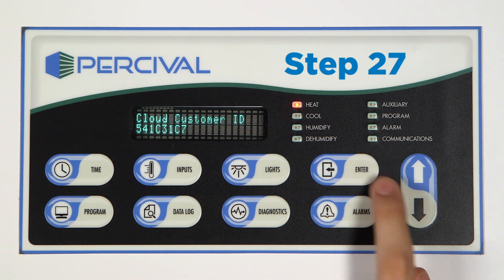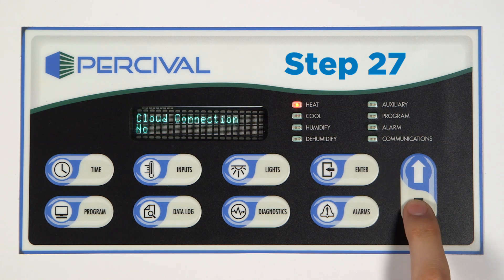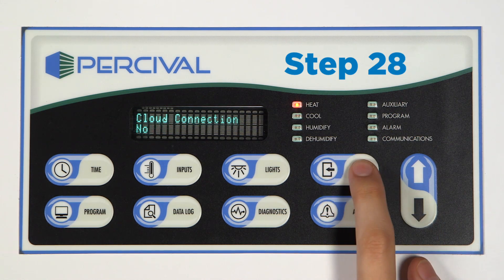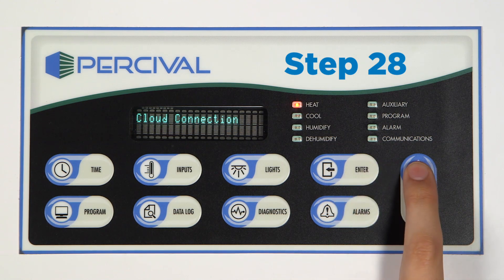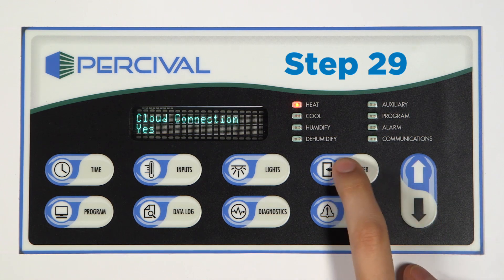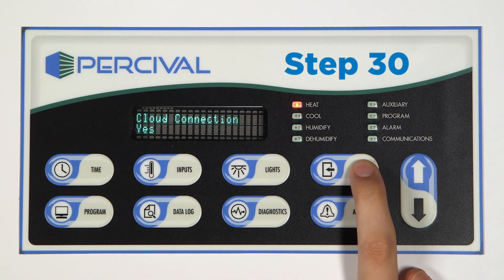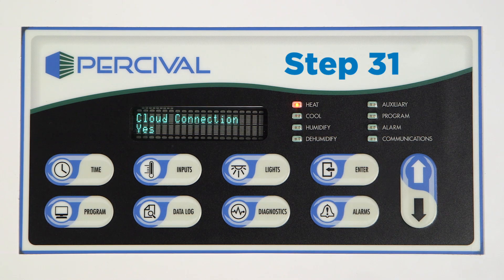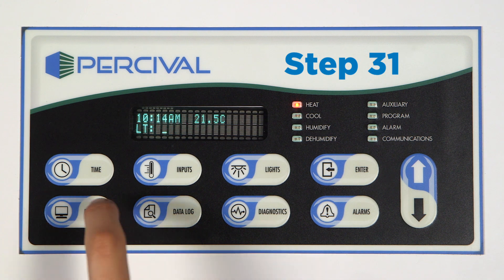Step 27: Press the down key to display cloud connection. Step 28: Press the enter key to edit this value. Step 29: Press the up or down keys to change the value to yes. Step 30: Press the enter key to accept the change. Step 31: Press the program button two times and you will return to the main display screen.